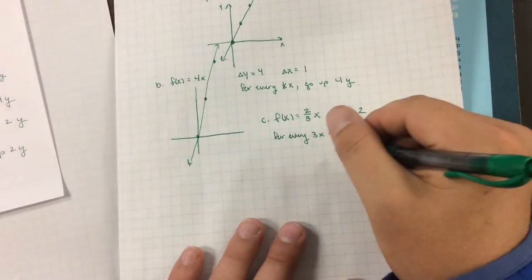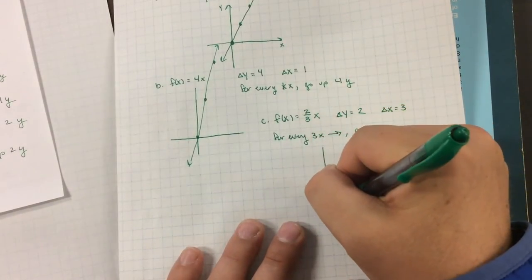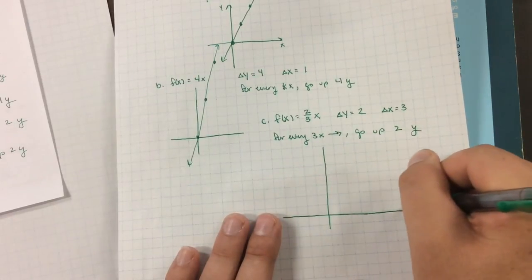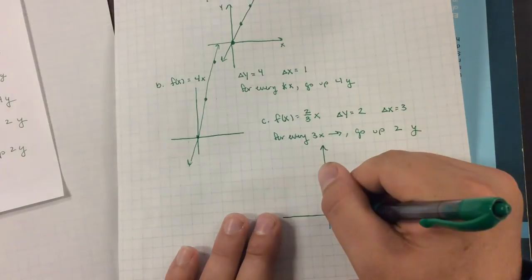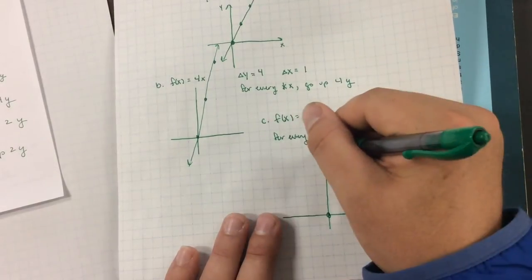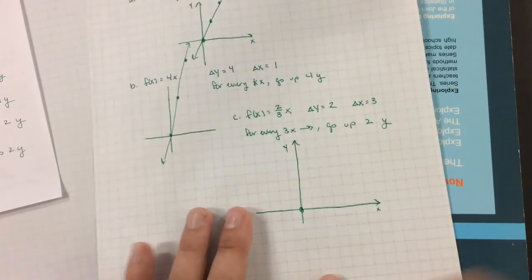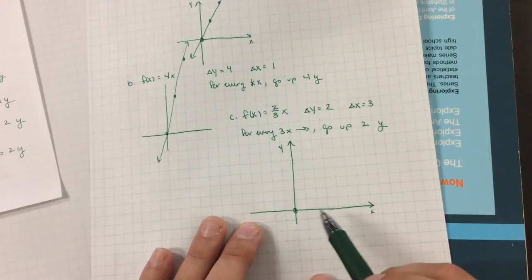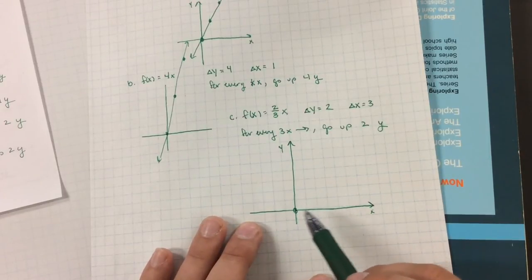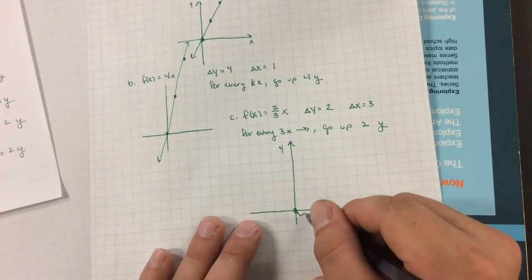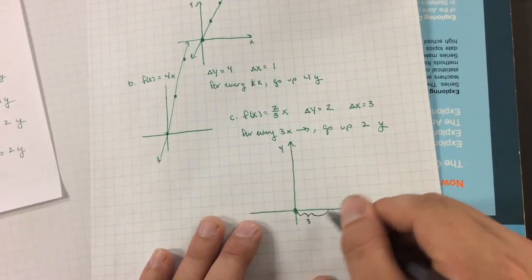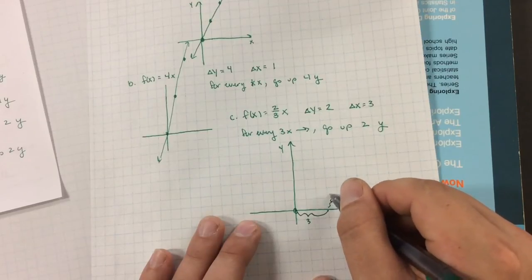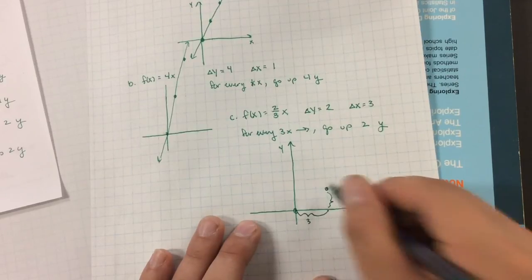Let's graph this. There's no starting amount. So if there's no starting amount, it means we're going to start at 0. And according to this rate, it says that for every 3x I go over, I'm going to go up 2y. So let's see. I'm going to go over 3. And then up 2. And I should have a point right there.